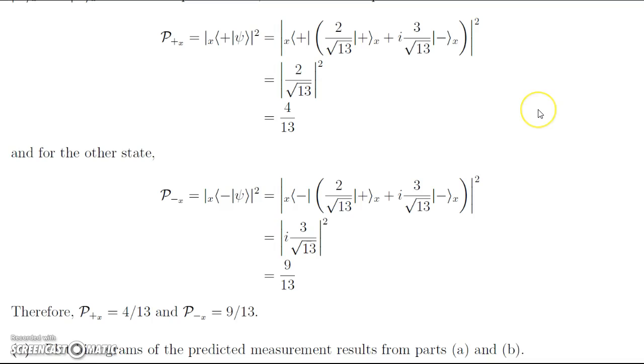The probability of measuring spin up in the x-direction is the modulus squared of the spin up bra in the x-direction, inner product with the state psi ket. Here we are left with this, and we just distribute through. Since now everything is in, all the bras and kets are represented by the same basis vectors, we have no clever substitution, and we're just left with 2 over 13 modulus squared. Since this is a real number, it's just this quantity squared, and we get 4 over 13 for our probability.